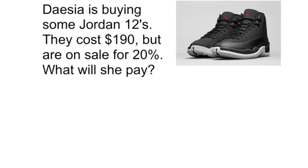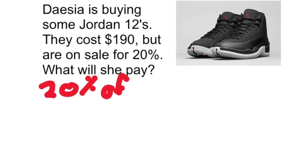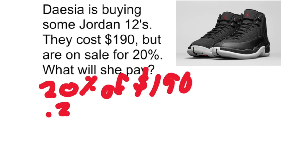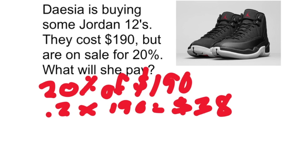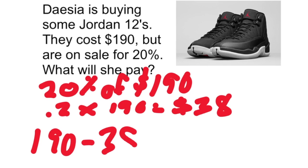Deja is buying some Jordan 12s. They cost $190 but are on sale for 20% off. To find the discount: 20% of $190 — we change 20% to a decimal, two-tenths, times 190, which gives us a discount of $38.